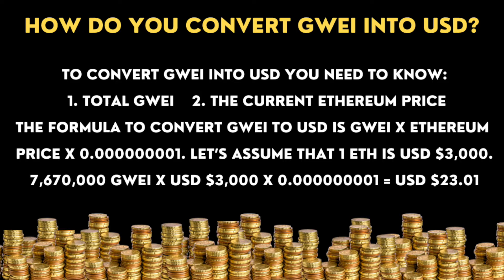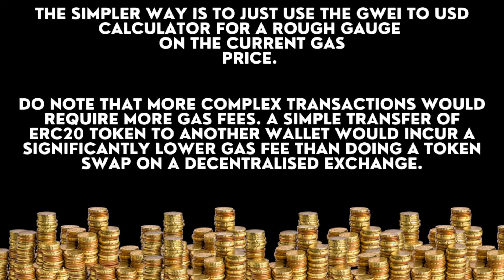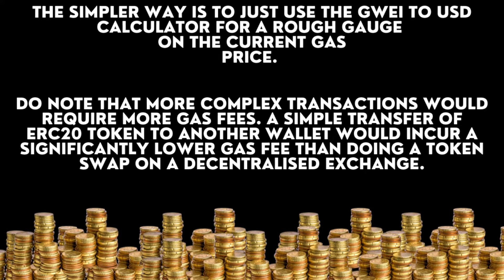We're going to go over how to convert Gwei into USD. To convert Gwei into USD, you need to know the total Gwei and the current Ethereum price. The formula is: Gwei times the Ethereum price times 0.000000001. Let's assume that 1 ETH is $3,000. The simple way is to just use the Gwei to USD calculator, which I'm about to show you, for a rough gauge on the current gas price.